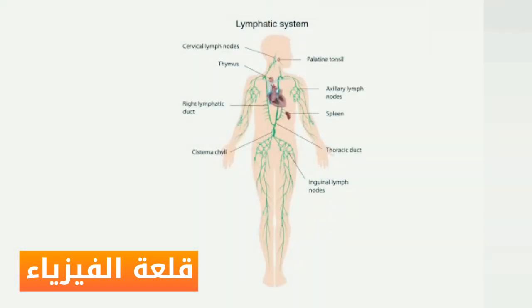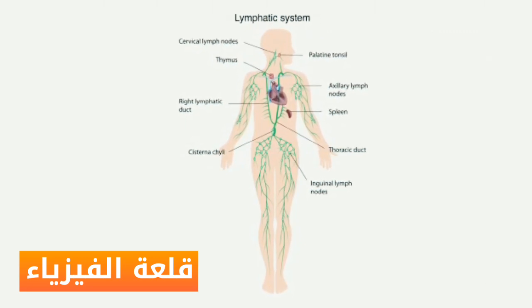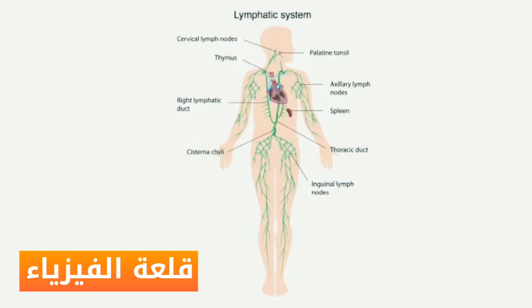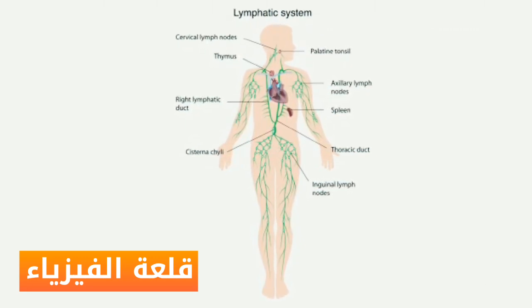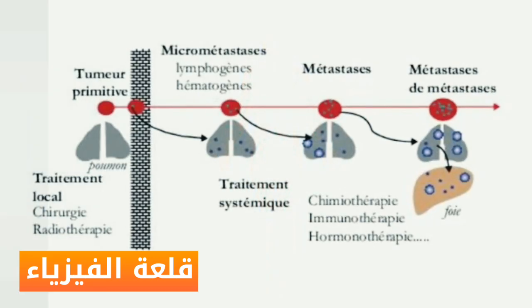As the lymphatic system connects many organs, it also provides a large network for the cancer. In addition, lymphatic vessels empty into the blood circulation, allowing malignant cells to undergo hematogenous spread.